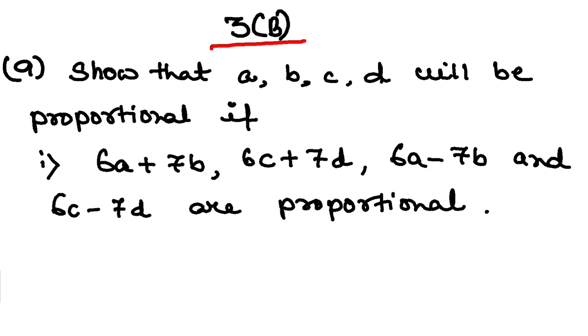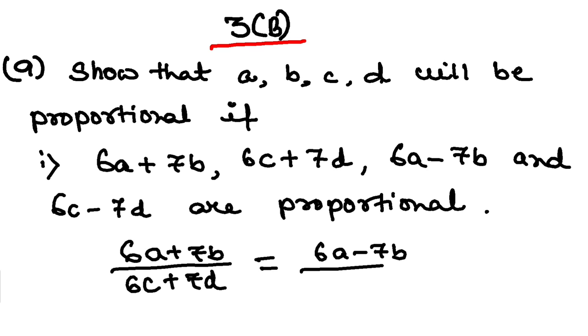That means what you have to prove basically. So this ratio is 6a plus 7b by 6c plus 7d because all these four terms are proportional. So this ratio of these two is equal to 6a minus 7b by 6c minus 7d.